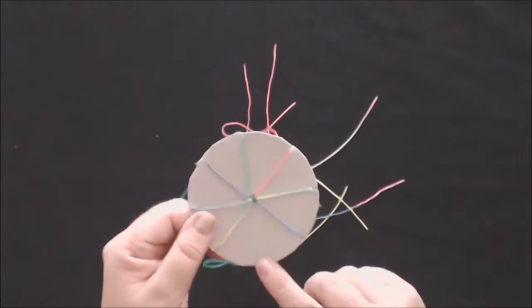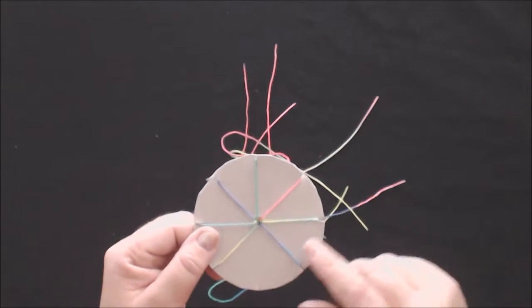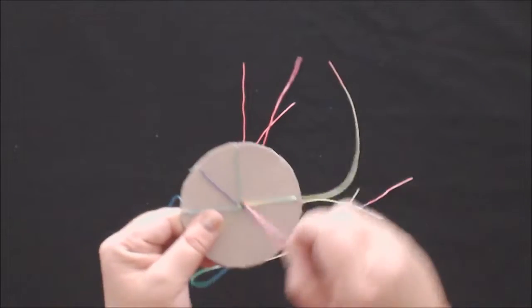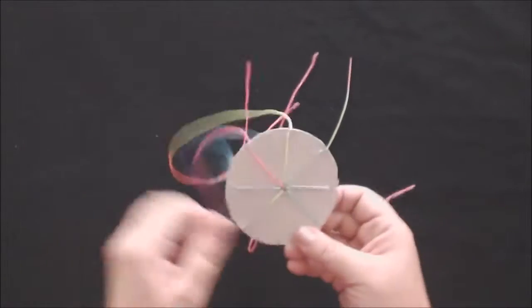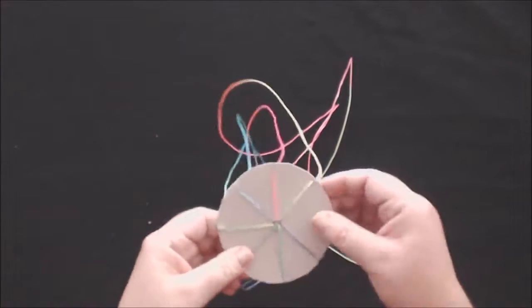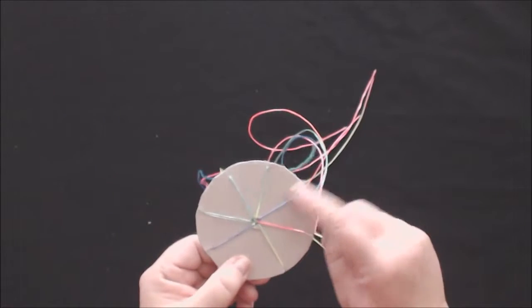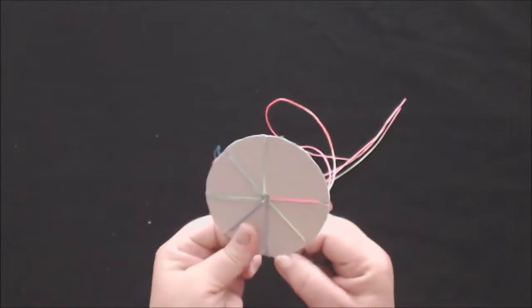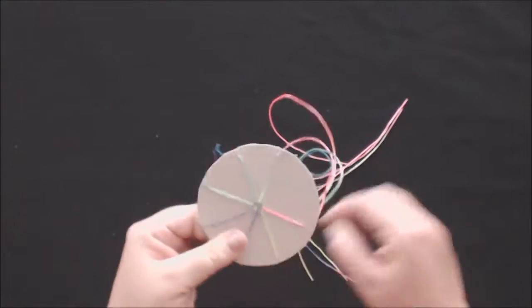We are now ready to begin. Count 3 strands to the right and bring it down into the empty slit. Do this all the way around until your bracelet is long enough to go around your arm.